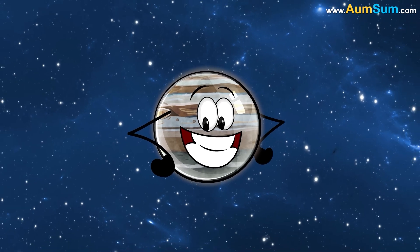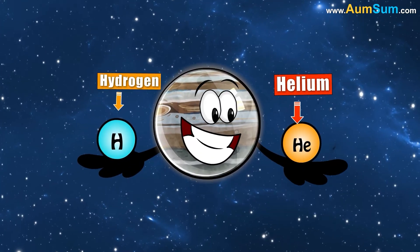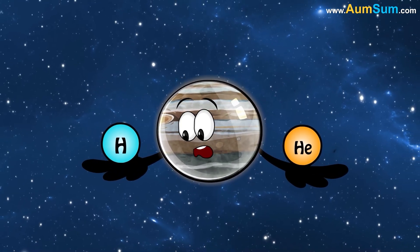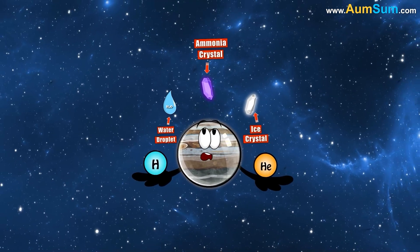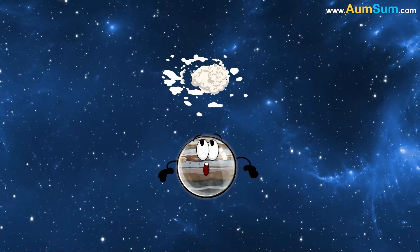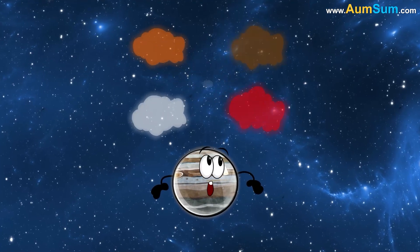Secondly, Jupiter's outer atmosphere is made up of mostly hydrogen and helium, with small amounts of other elements like water droplets, ice crystals, and ammonia crystals. When these elements form clouds, they create shades of white, orange, brown, and red.